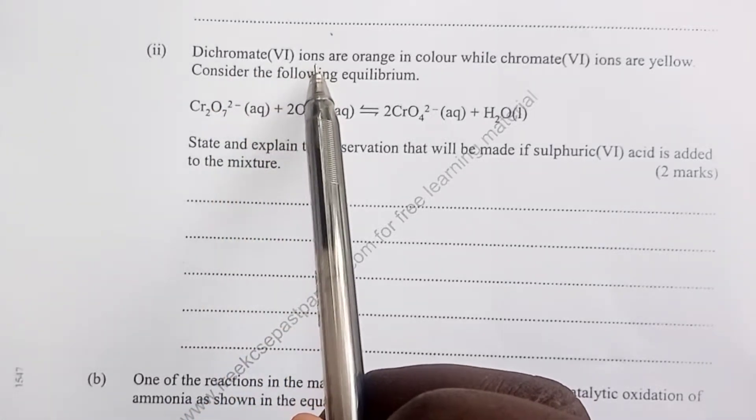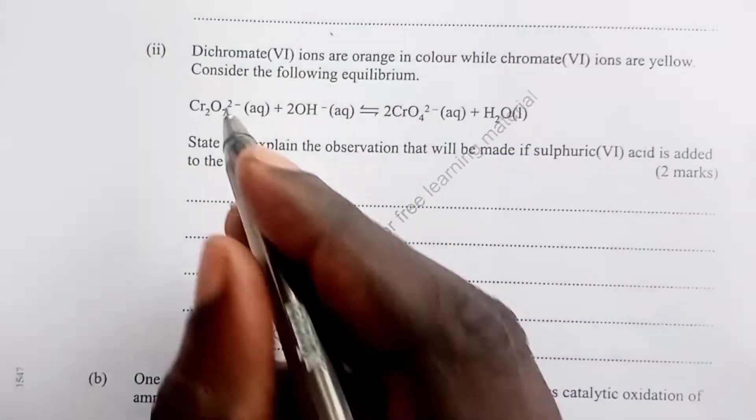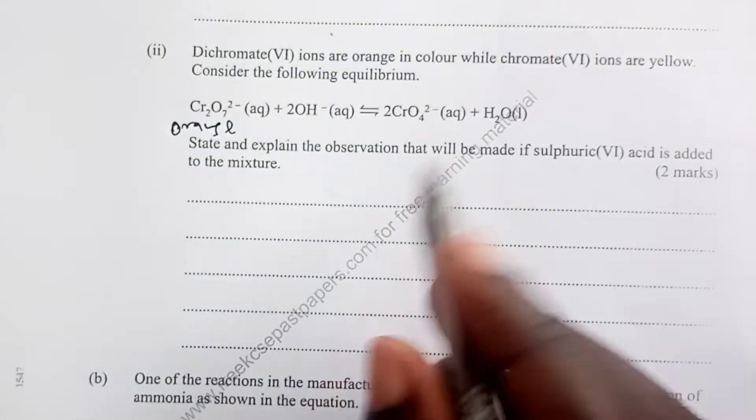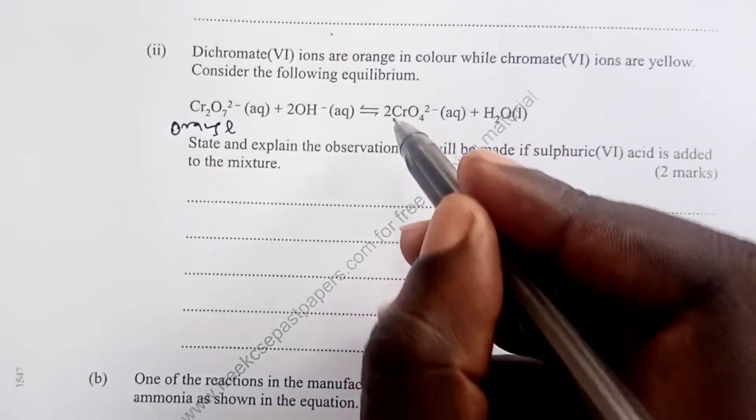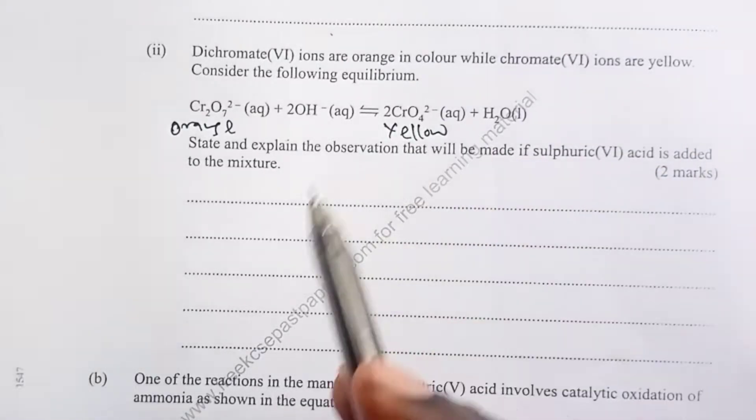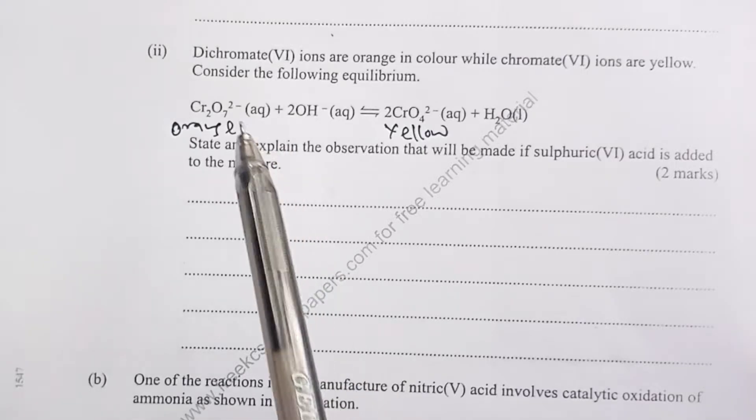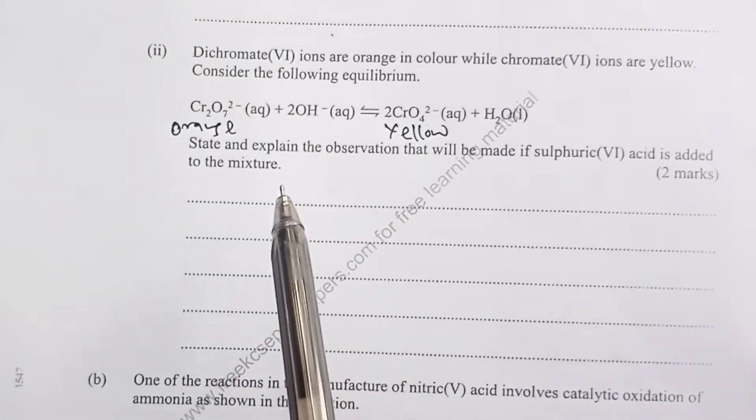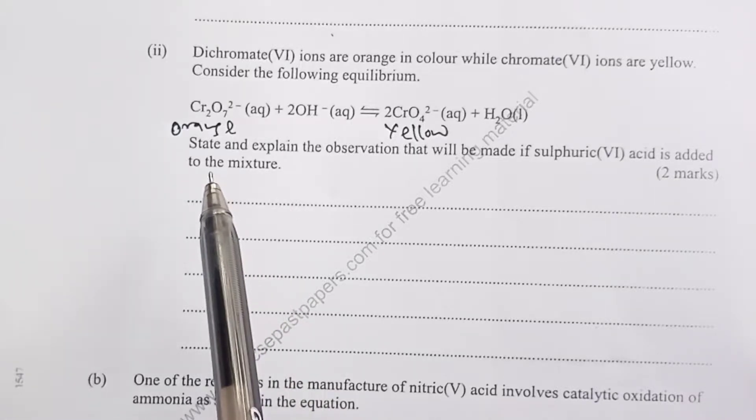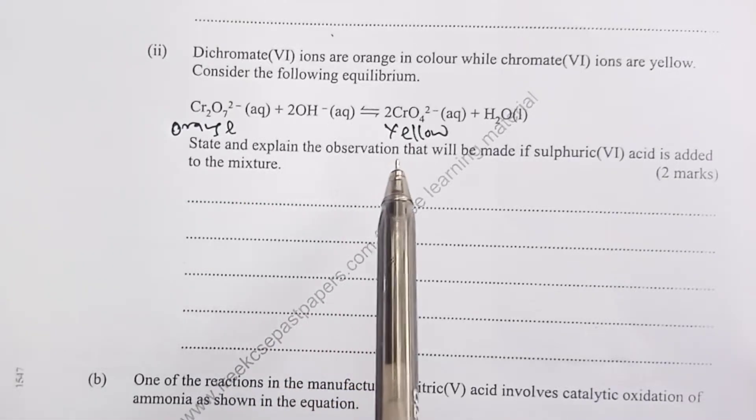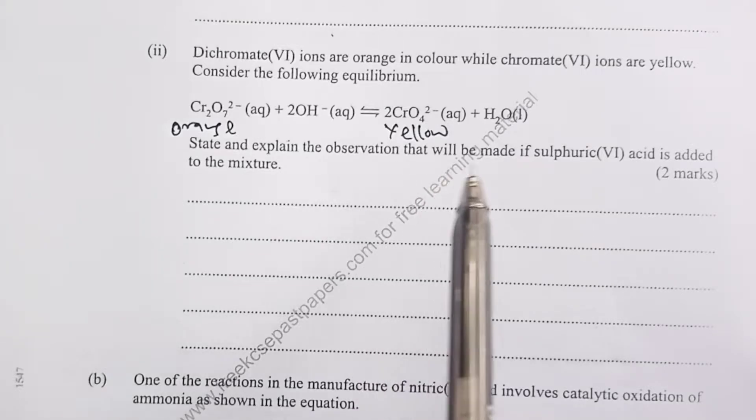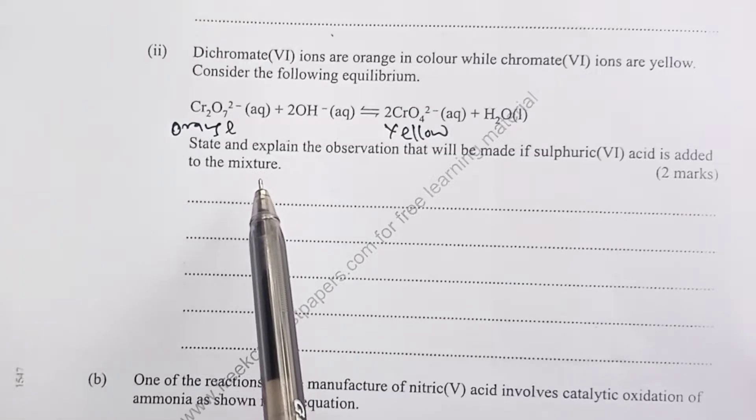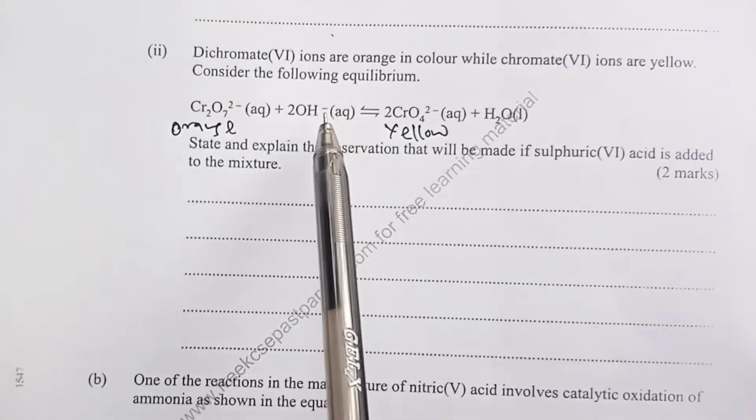Dichromate(VI) ions are orange, while chromate(VI) ions are yellow. Then we are told to consider the equilibrium between the two. The examiner is asking us to state and explain the observation that will be made if sulfuric(VI) acid is added to the mixture.